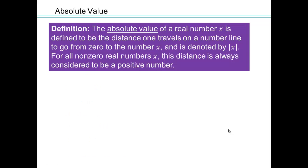Let's talk about absolute value. Absolute value of a real number is defined to be the distance one travels on a number line to go from 0 to the number x. And it's denoted by these two vertical bars and x sitting in between them. For all non-zero real numbers x, this distance is always considered to be a positive number. So for example, absolute value of 3 is 3. Absolute value of negative 3 is 3. And absolute value of 0 is 0.